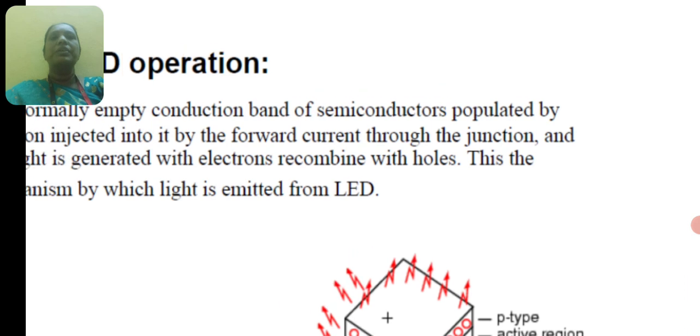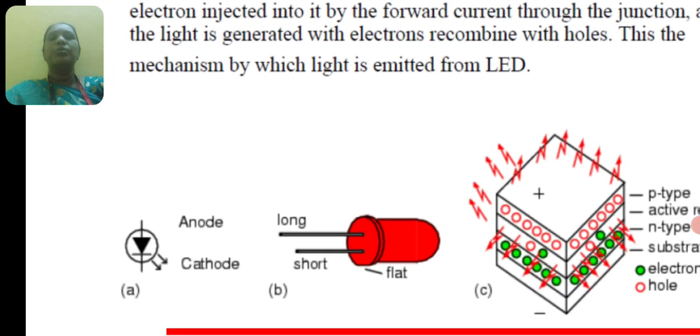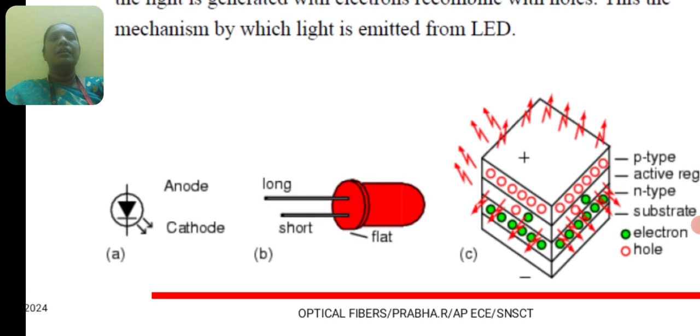In the first diagram, we have an anode and cathode, that is the diode LED symbol. The second one is its structure, and the third one is its construction.